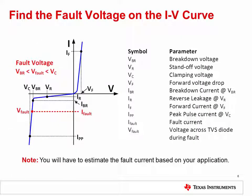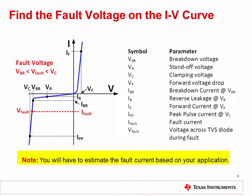Looking again at the TVS diode IV curve: in our example, we are targeting 18 volts as the reverse standoff voltage, because this is the normal operating voltage applied to the op amp. VBR is the breakdown voltage, the point at which the device is just beginning to turn on — typically 1 milliamp of current flows at the breakdown voltage. The clamp voltage VC is the voltage across the TVS diode with maximum reverse current flowing through it. Depending on the current expected during the fault condition, the fault voltage will be somewhere between VBR and VC. One way to estimate the fault current is to consider the maximum supply current and add margin. In this example, we will estimate the fault current at 2 amps.